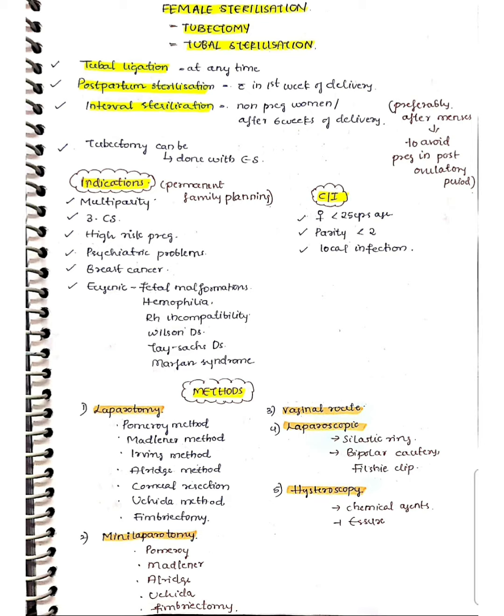The indications include multiparous women as a permanent family planning method, women who have undergone three cesarean sections, high-risk pregnant women, psychiatric problems, breast cancer, eugenic indications related to fetal malformations such as syndromic conditions, hemophilia, Rh incompatibility, Wilson's disease, Marfan syndrome, and Tay-Sachs disease.